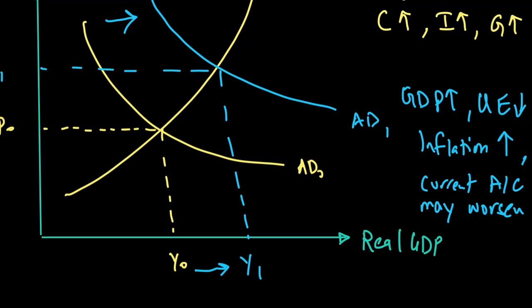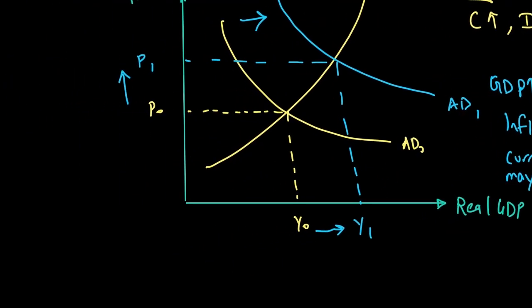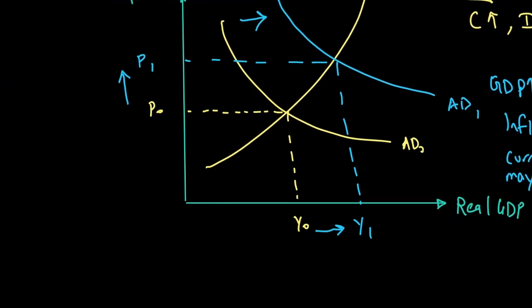The contractionary fiscal policy, on the other hand, has an opposite effect, because in a contractionary fiscal policy, what we're trying to do is that we're trying to make the government expenditure to go down. And at the same time, we're looking at taxes to go up. And that in turn would mean disposable income is going down, so consumption will fall. Firms are taxed more, so their incentive to invest goes down. At the same time, government spending is also reduced.